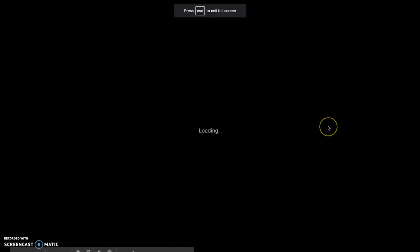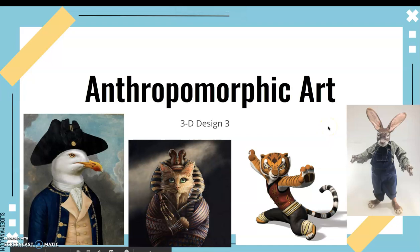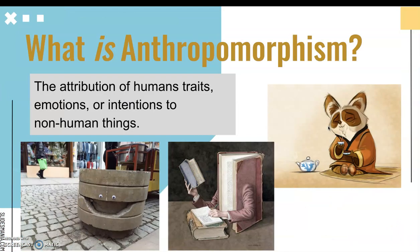In this presentation you're going to learn about anthropomorphism. We're going to look at various examples of anthropomorphic art. Humans have an innate desire to apply human traits to non-human animals and things, which is called anthropomorphism — the attribution of human traits, emotions, or intentions to non-human things, and we have some examples here on the screen.